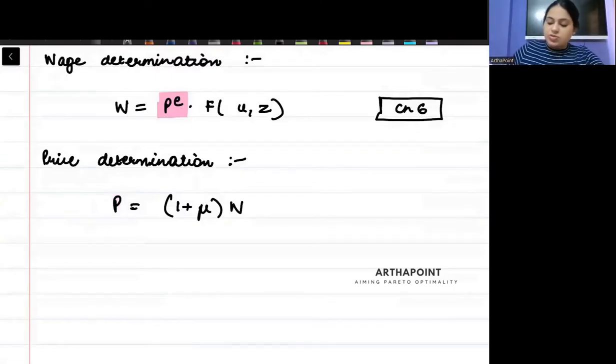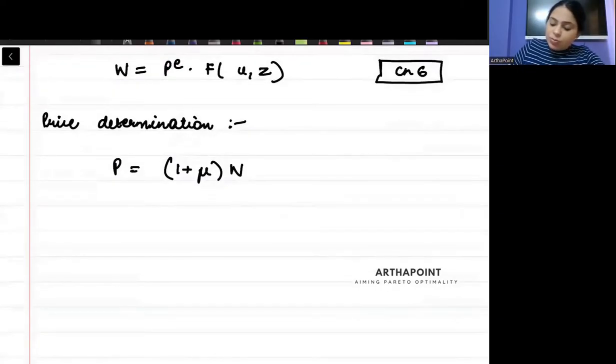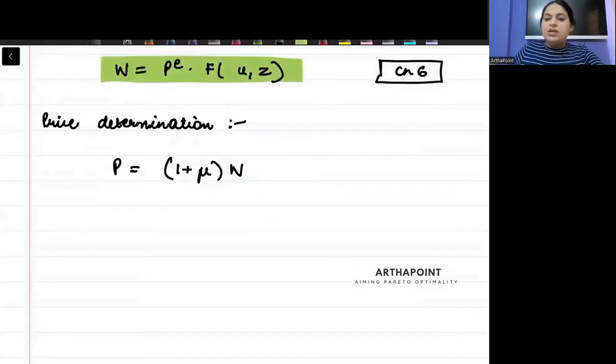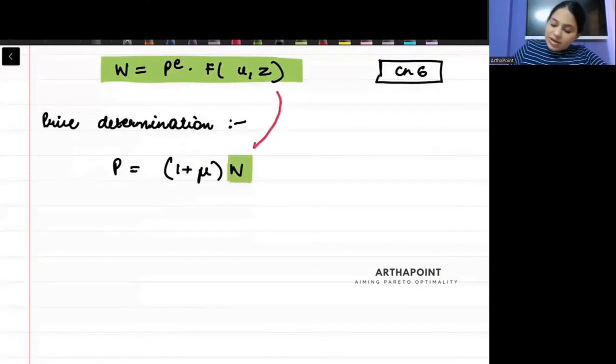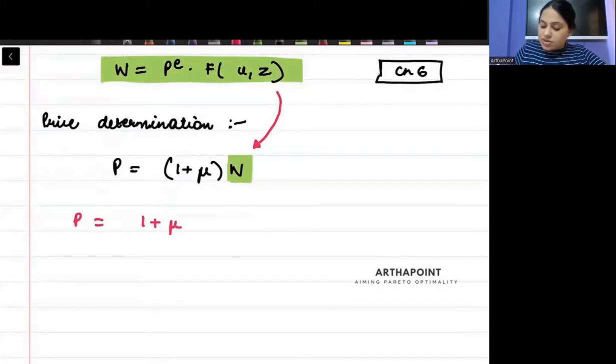In today's lecture, I'm not going to do that. I'm going to negate that assumption. What I'm going to do is the following. I'm going to pick up this relationship from the wage determining relation and I'm going to put that here. So if I go ahead and plug in that here, what will I get? I will get P equals (1 + μ) times P^e times F(u, z).